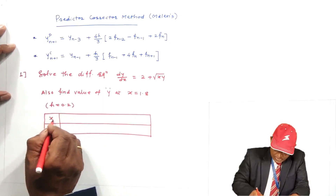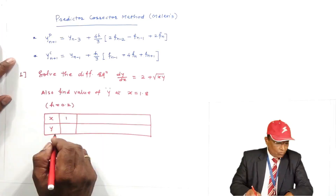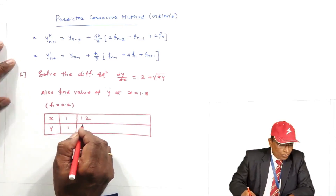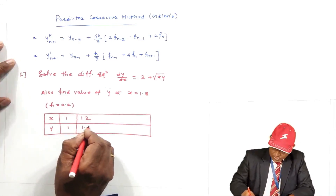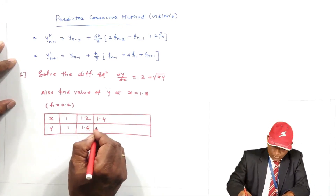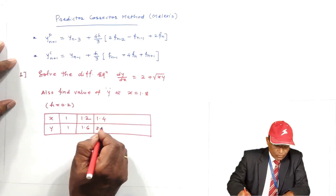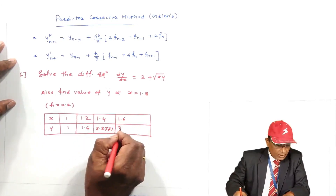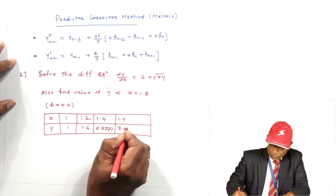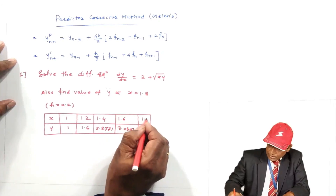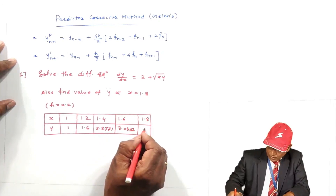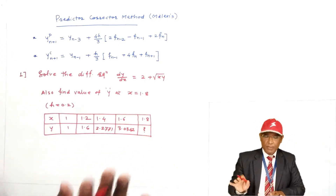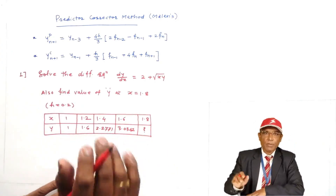The table gives X and Y values: at x = 1.0, Y = 1.0; at x = 1.2, Y = 1.6; at x = 1.4, Y = 2.271; at x = 1.6, Y = 3.034. At x = 1.8, the value of Y is what we need to find.